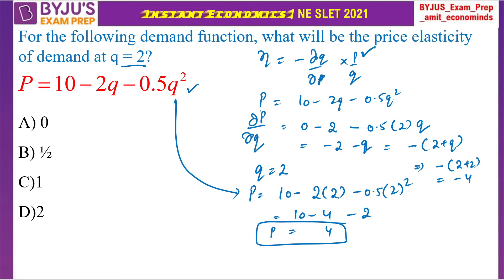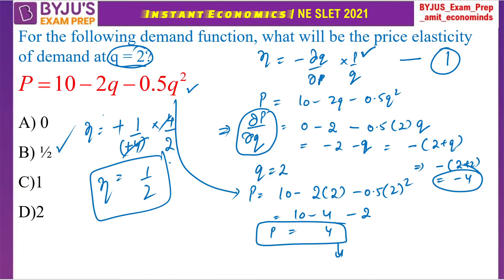Yeh aagya aapke paas dP by dQ value jo ki minus 4 hai aur aapke paas Q ki value. Ab sab kuch utha ke pehle wale formula mein daal dijiye. So minus hai yahan and yahan pe ek point hai dq by dp which is dp by dq. So, this is 1 by minus 4 multiply, P means 4 upon Q means 2. So this is minus and this is minus cut, 4, 4 cut. So, neta yaani elasticity value is 1 by 2. So answer is 1 by 2.